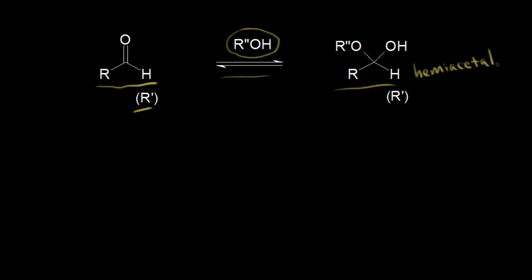In terms of the mechanism for the formation of a hemiacetal, it's completely analogous to the formation of a hydrate. We have our carbonyl situation for our aldehyde or ketone, with the oxygen being more electronegative and withdrawing some electron density away from our carbonyl carbon. We have a partially negative oxygen and a partially positive carbonyl carbon — it is electrophilic.